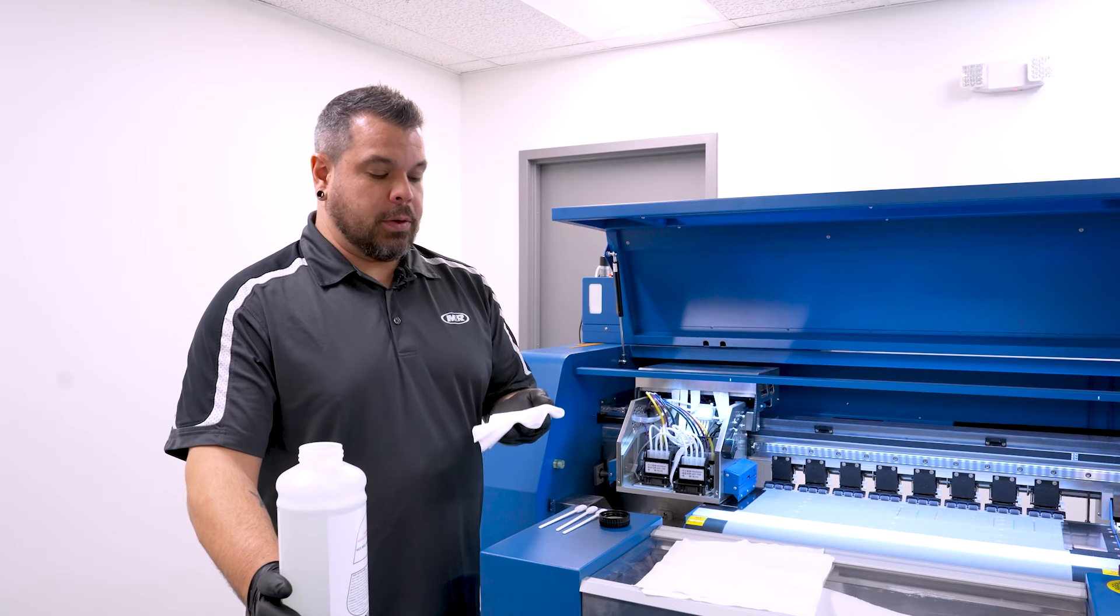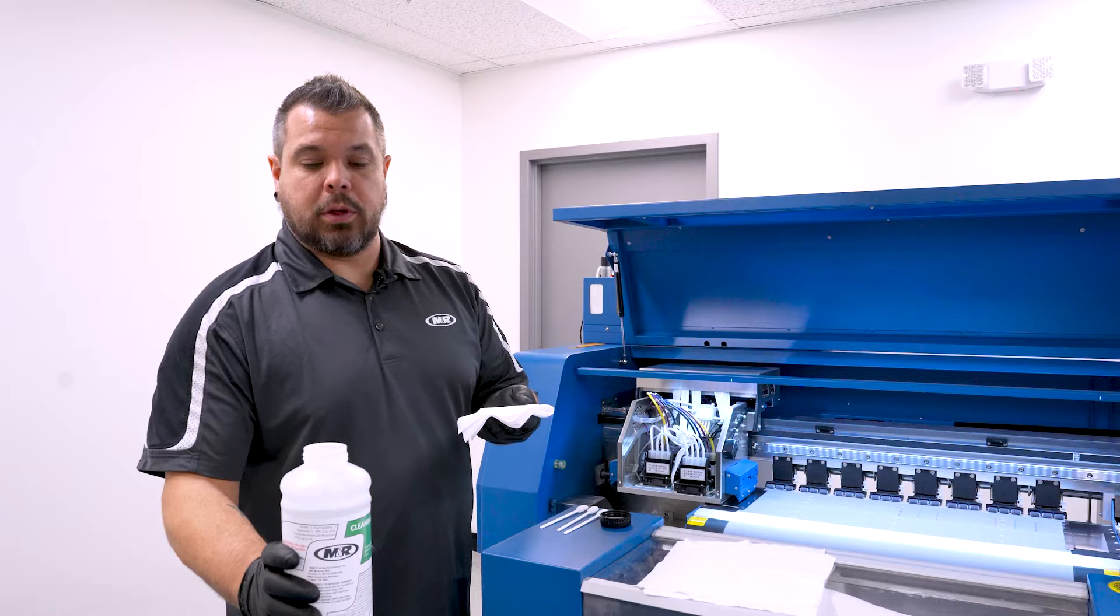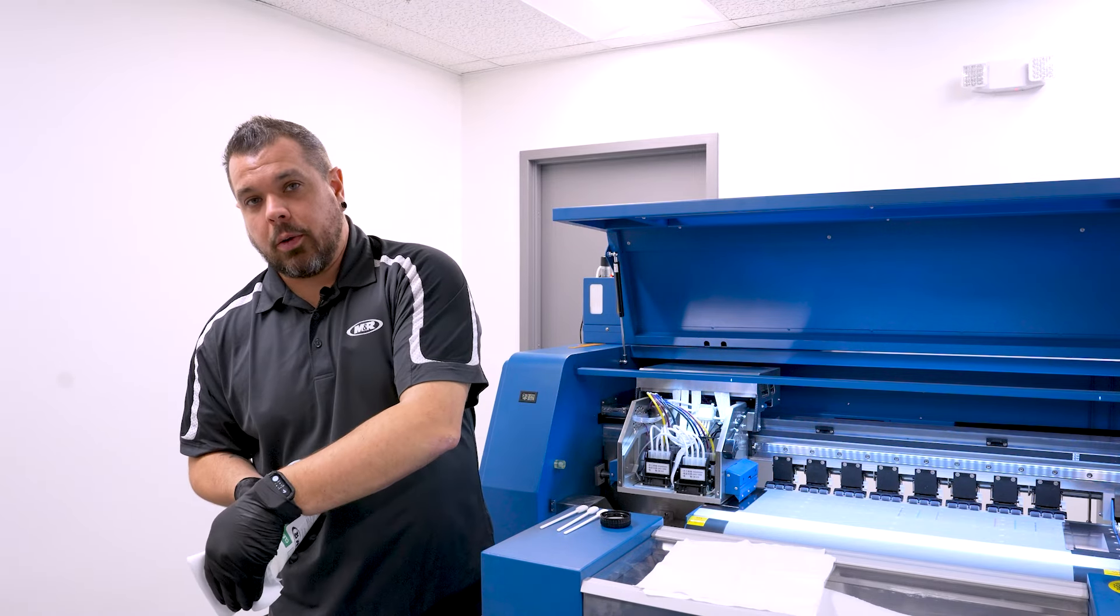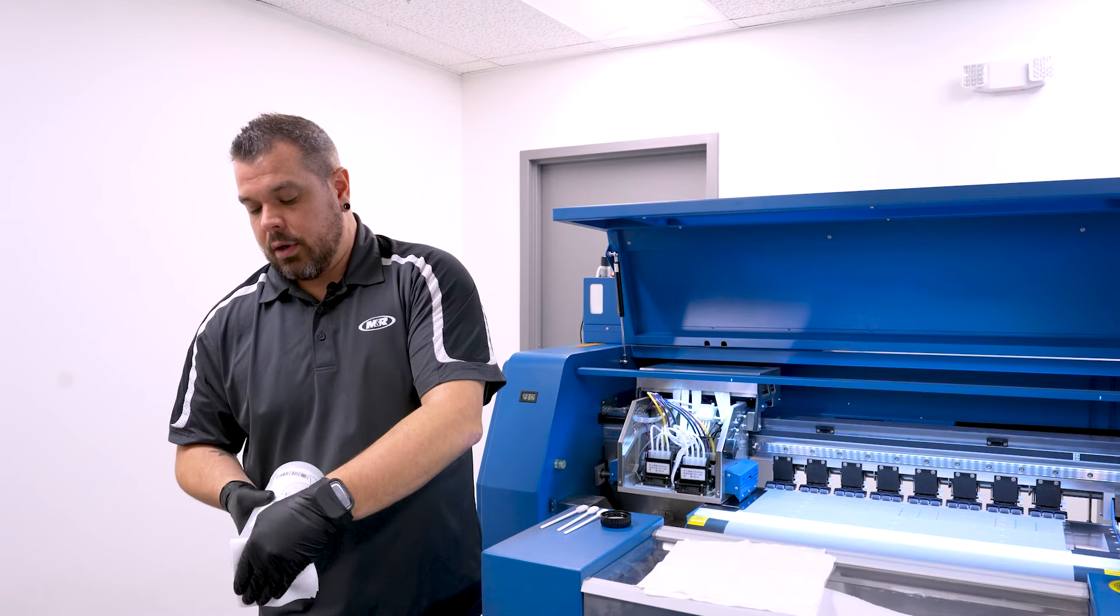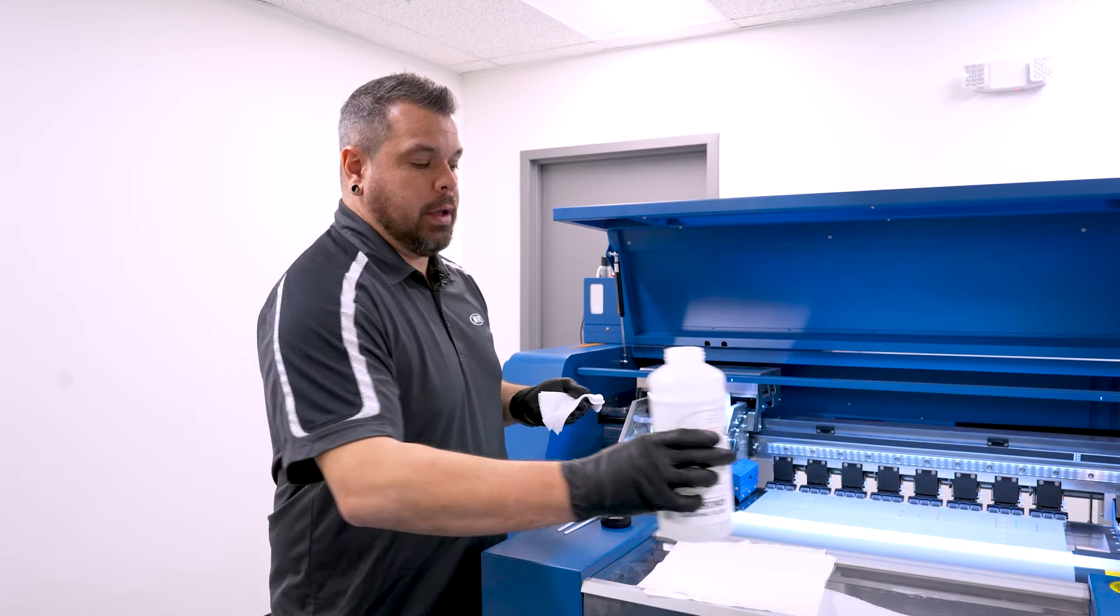So the next thing you're going to do is take a clean poly wipe and some of your M&R Quattro cleaning solution and get the poly wipe pretty wet with the solution. You don't want to have a dry wipe when you're cleaning underneath here.